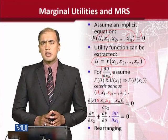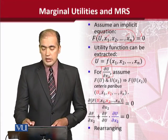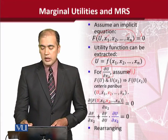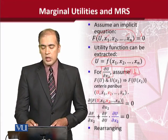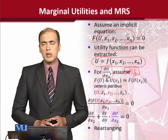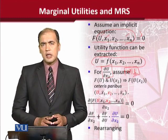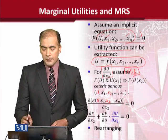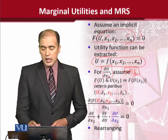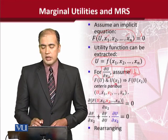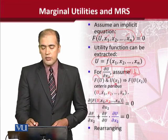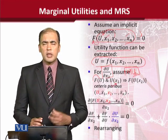For example, marginal utility. We are talking about MU2. If we are to calculate MU2, we have to calculate delta U over delta x2. So we have to make some arrangements. We know that f is a function of u, and then u is a function of x2, because x2 is a function of u and then u is a function of f.